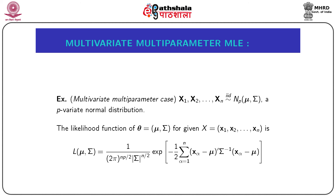Let x₁, x₂, ..., xₙ be a random sample of size n drawn from a p-variate normal distribution with mean vector μ and dispersion matrix Σ. The random sample observations xₐ will each be a p-component random vector. The likelihood function of θ = (μ, Σ) for given data X = {x₁, x₂, ..., xₙ} is: L(μ, Σ) = (1/(2π)^(np/2)) · |Σ|^(n/2) · exp(−½ Σₐ (xₐ − μ)ᵀ Σ⁻¹ (xₐ − μ)).